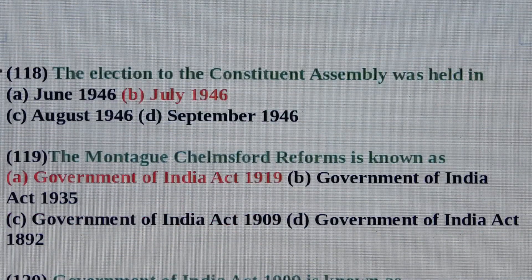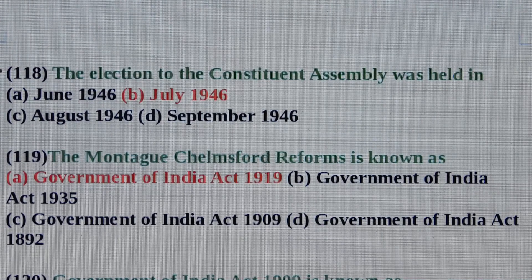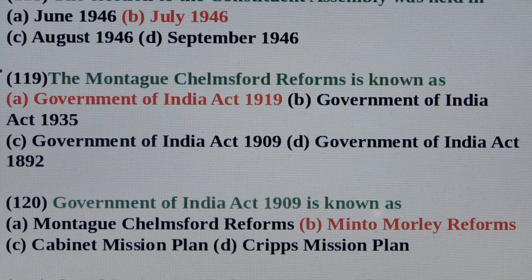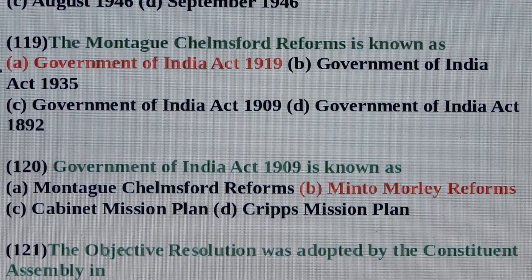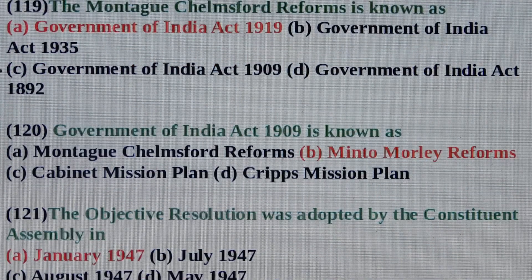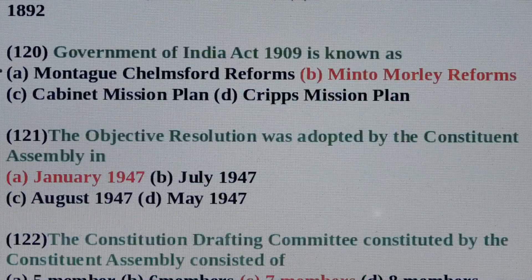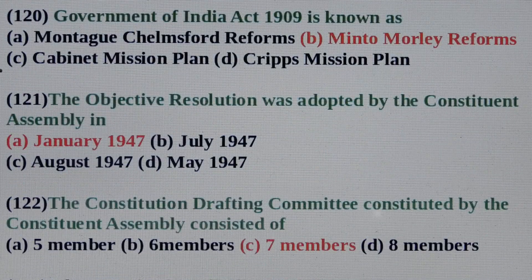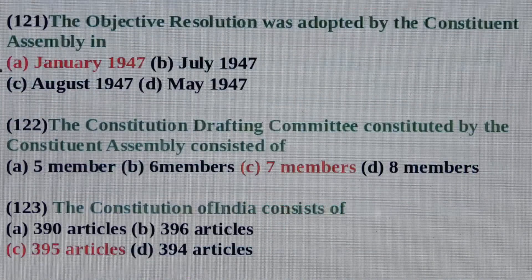Question No. 118: The election to the constituent assembly was held in? Answer is Option B: July 1946. Question No. 119: The Montagu-Chelmsford reforms is known as? Answer is Option A: Government of India Act 1919. Question No. 120: Government of India Act 1909 is known as? Answer is Option B: Minto-Morley reforms. Question No. 121: The objective resolution was adopted by the constituent assembly in? Answer is Option A: January 1947.